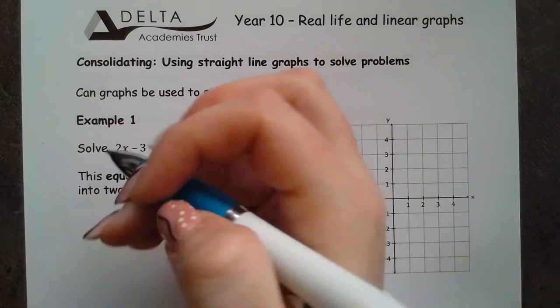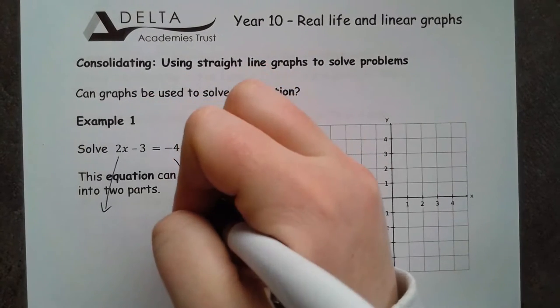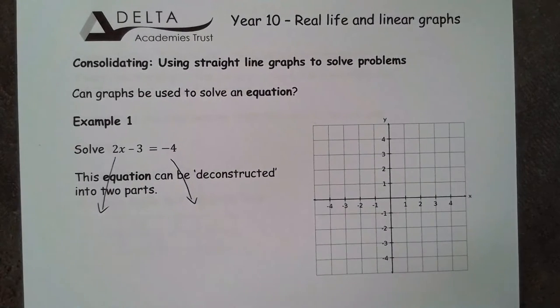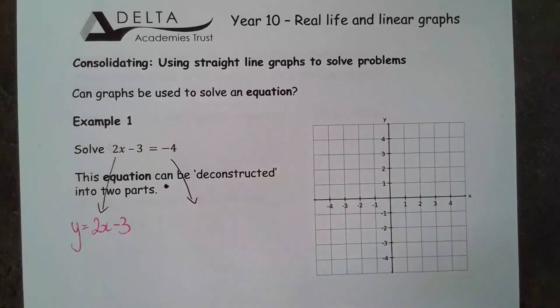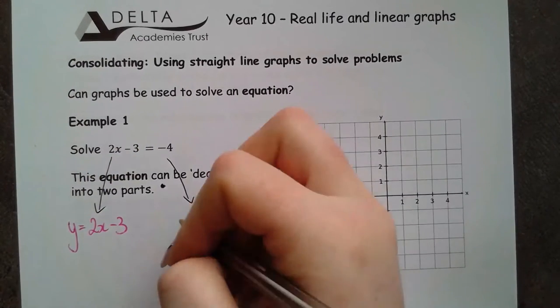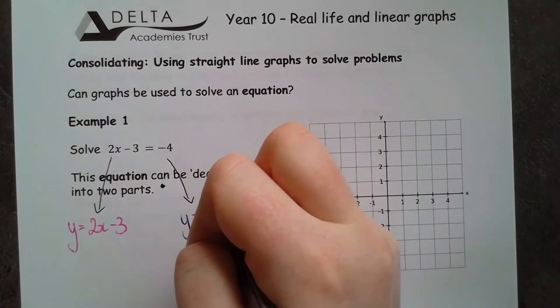So what I'm going to do is pull apart either side of that equation and come up with two different things. The first one being y equals 2x minus 3 and the other being when y is equal to negative 4.